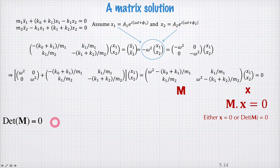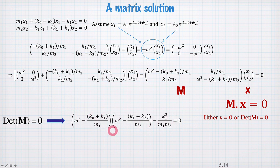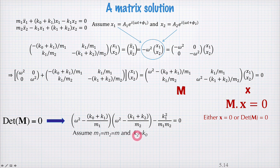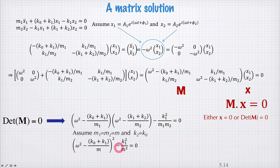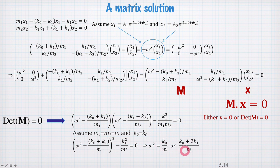The determinant of M equal to zero — the determinant is the product of the diagonal elements minus the product of the anti-diagonal elements — so that means we have this equation here. This is a quadratic equation for omega squared, which we could solve, though it would be pretty ugly. Let's look at the solution for the symmetric case we examined previously, where the masses were equal and k2 and k0 were equal, and see whether this gives us the same normal mode frequencies. Making those substitutions we find this simpler looking quadratic equation; solving it for omega squared we find omega squared is k0/m or (k0 + 2k1)/m — the symmetric and anti-symmetric normal mode frequencies.